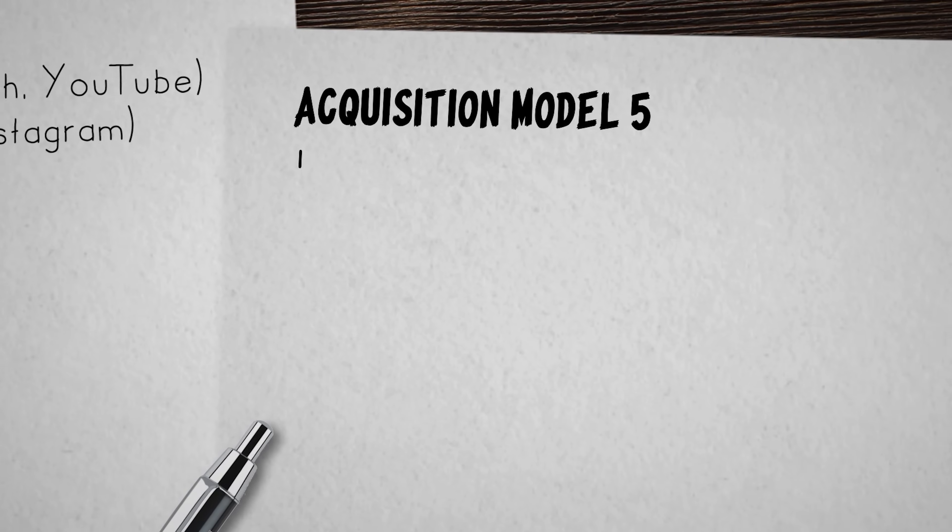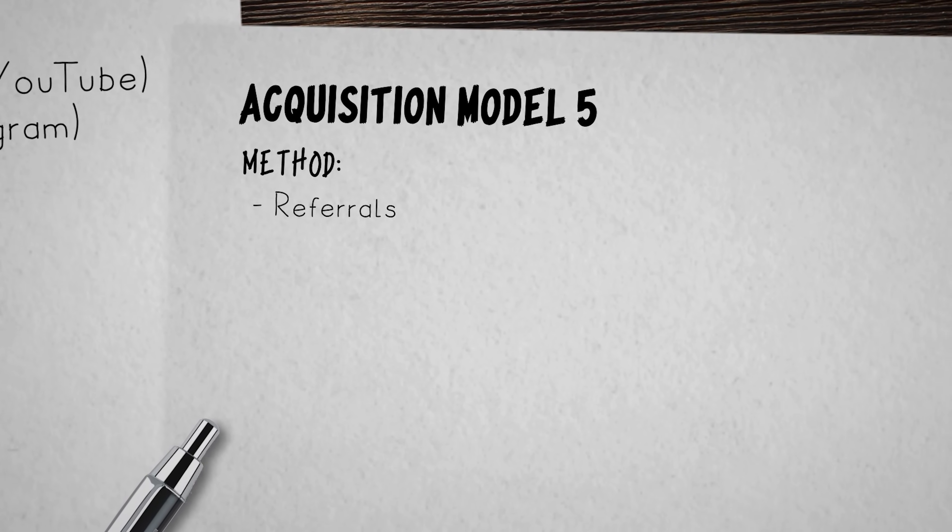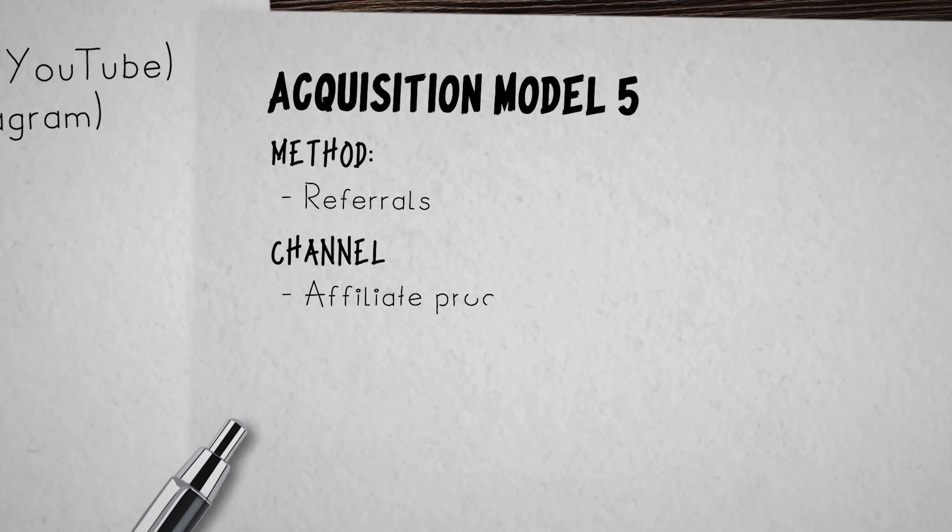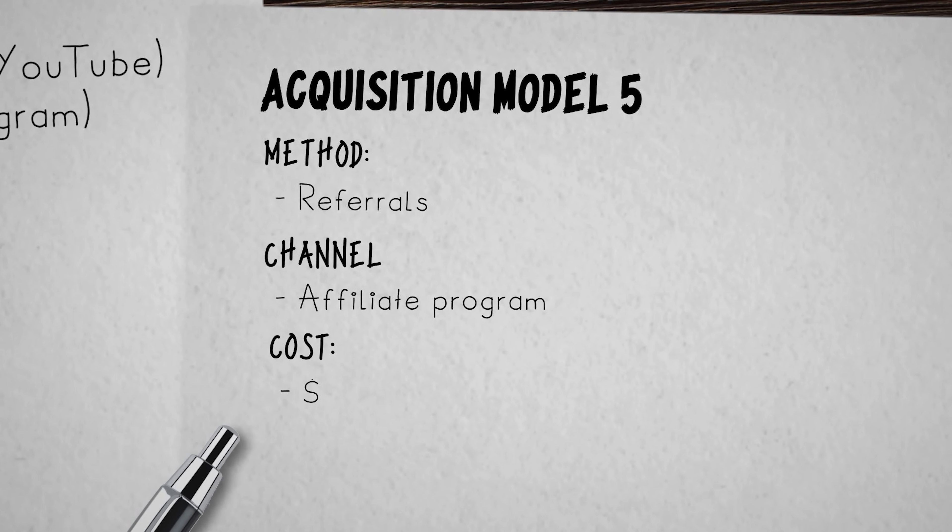In the second acquisition model, we're once again going to use the referral method. But this time, instead of asking a handful of users to refer others, we're going to offer a full affiliate program where new users can sign up, create referral links, and start spreading the word. At this scale, you need to offer affiliates proper compensation. Some affiliate programs offer 10%, 20%, even 50% of all recurring revenue that new referrals generate. How much you offer depends on your direction: if you're in growth mode, share a big chunk of revenue to keep everyone highly motivated; if you're in automation mode, you can go as low as gift cards or unlocking new features for your affiliate partners.